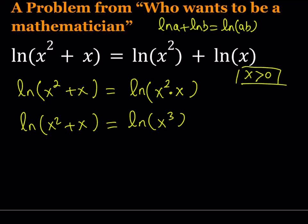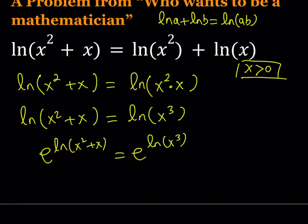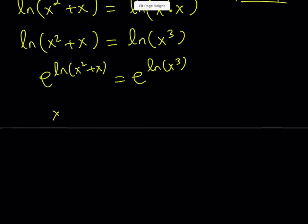Now we can get rid of the ln's, which means you can do e to the power ln something. If you want to do it that way, that's fine too. Like make it a little fancier. And then e to the power ln something is going to equal x² + x = x³.